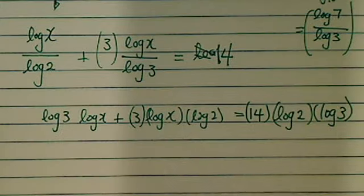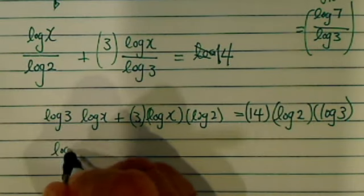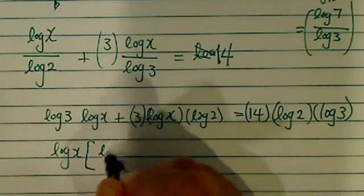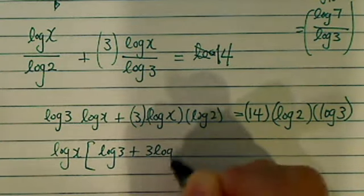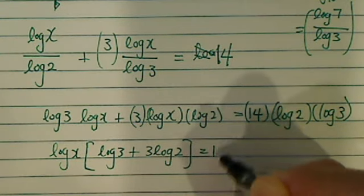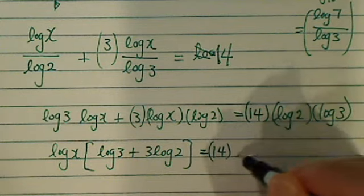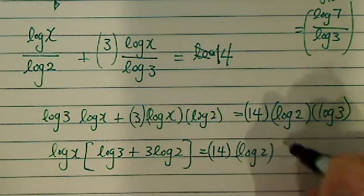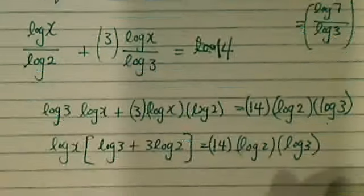From here, let's move on. So log of x, let's pull it out. I have log of 3 plus 3 log of 2 is equal to 14 times log of 2, log of 3.